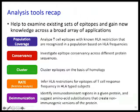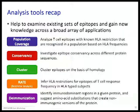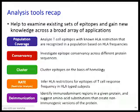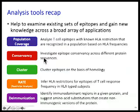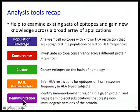As a recap of analysis tools, we went through: population coverage, to infer what coverage a particular set of peptides provides in a particular ethnicity or world region; conservancy, how conserved a particular epitope or set of epitopes is within a set of sequences; clustering; inferring HLA restrictions; and providing suggestions for reducing immunogenicity of protein drugs.